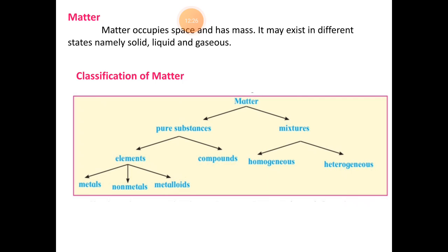Next is metalloids. For example, silicon, arsenic, germanium — these show properties of both metals and non-metals; that is why we call them metalloids. Now the second part of pure substances is compounds. Compounds are pure substances which cannot be broken down into simpler substances by ordinary chemical change. In compounds, two or three elements are combined in a fixed proportion — that is what we call compounds, and we can divide them using physicochemical methods.